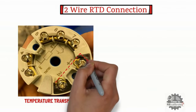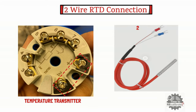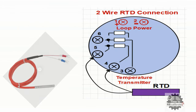The loop power supply will be connected to terminal number 1 and terminal number 2, and terminals 3, 4, 5, and 6 are used for RTD sensor input. As the name suggests, a 2-wire transmitter has 2 cables — one red and one white. To connect 2-wire RTD to the temperature transmitter, connect the red cable to terminal number 5 and connect the white cable to terminal number 4 of the temperature transmitter.